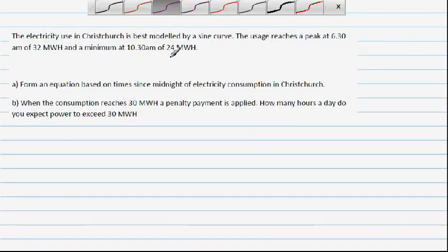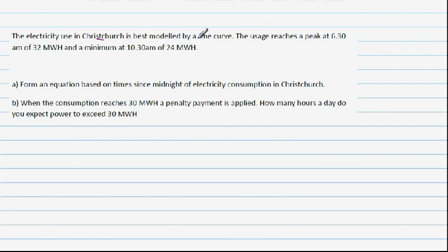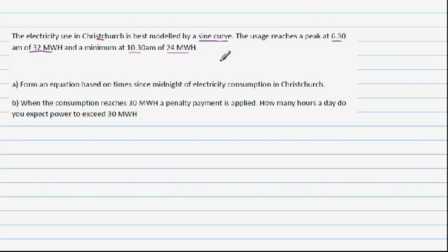The electricity used in Christchurch is best modeled by a sine curve — you can also write this as a cosine, since sine and cosine are basically the same graph. The usage reaches a peak at 6:30 AM of 32 megawatts per hour and a minimum at 10:30 of 24 megawatts. Let's try to understand the key facts: period, amplitude, maximum, and minimum. T represents time and E represents electricity in megawatts per hour.